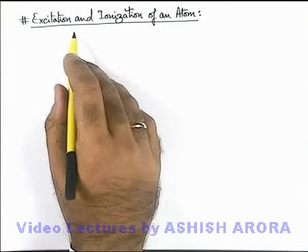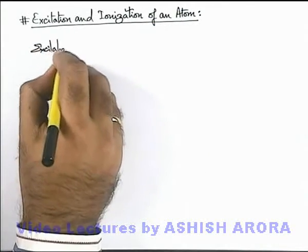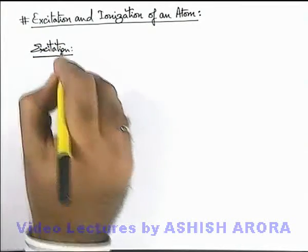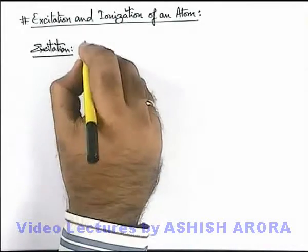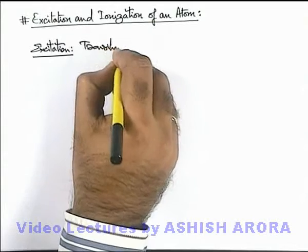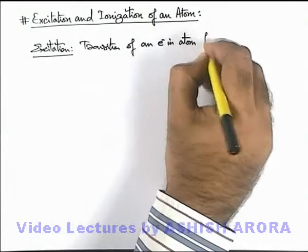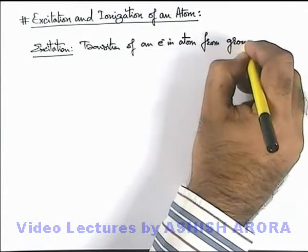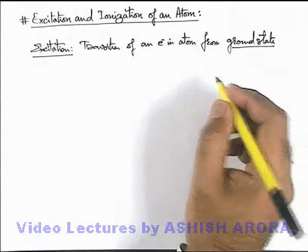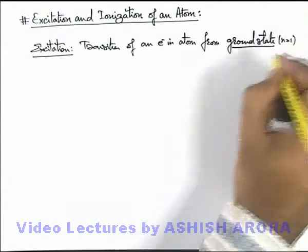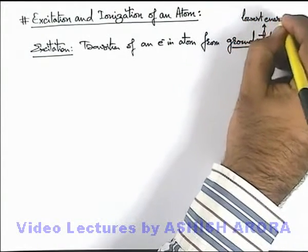Let us study about excitation and ionization of an atom. If we talk about excitation — you might have studied atomic excitation in chemistry also — here excitation we can simply define as the transition of an electron in an atom from ground state. Ground state is basically used to term the lowest energy level in any atom, that is n equal to 1, the lowest energy state.